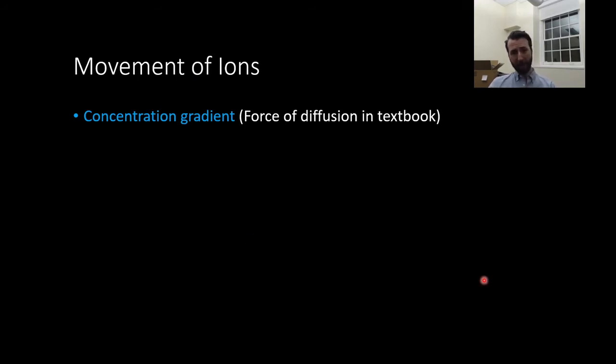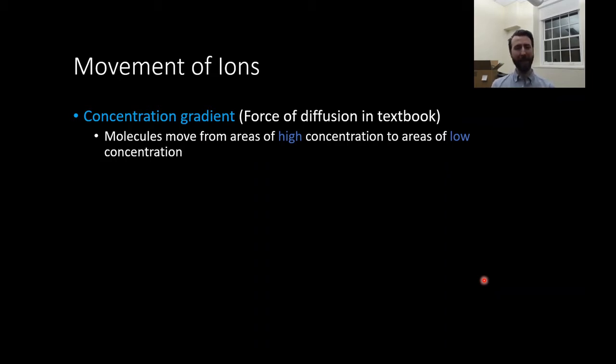Let's talk ion movement. The first thing that I want to talk about is the concentration gradient or the force of diffusion. This is just the basic idea that molecules will move from areas of high concentration to areas of low concentration, right? You can imagine putting salt or something like that into a glass of water. You watch the salt, it spreads out and diffuses until it's evenly distributed. Molecules just do this. That's the force that drives them. Things that are packed closely together want to be evenly distributed in their medium. So concentration gradient is one of the things that drives the movement of ions, high concentration to low concentration.